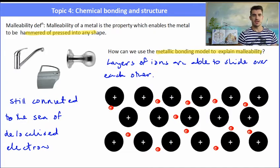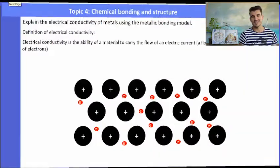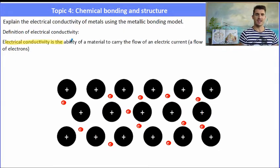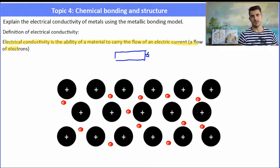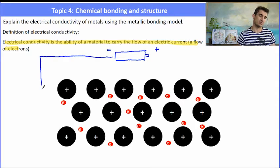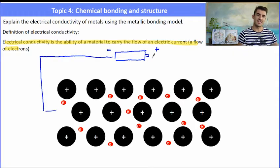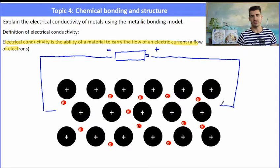We also need to be able to explain the electrical conductivity of a metal using the bonding model. Electrical conductivity is defined as the ability of a material to carry the flow of an electric current. So I want you to pretend that we have a battery and our battery has a positive terminal and a negative terminal. And when I connect that battery up to my metal, what I'm doing is creating a negative end and a positive end.